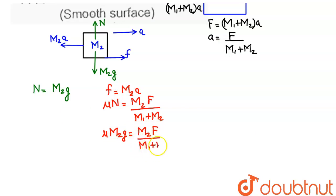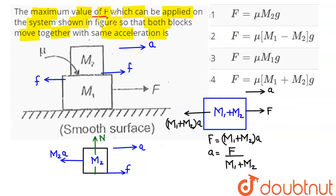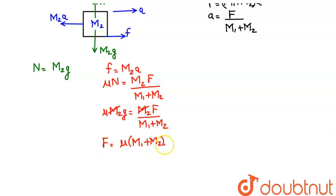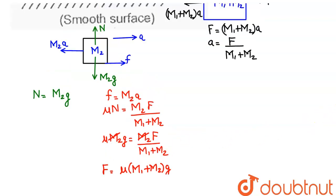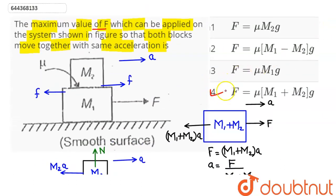We need the maximum value of F so that both blocks move with common acceleration. The m2 terms cancel out, giving F = μ·(m1 + m2)·g. Among the four options, this corresponds to option 4: F = μ(m1 + m2)g, which is the correct answer.